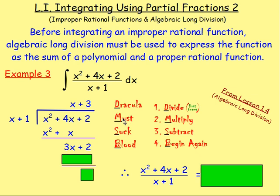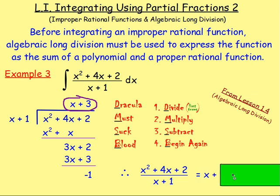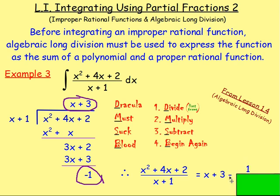The degree of this remainder is the same as what we're dividing by, so we have to begin again. 3x divided by first term x gives positive 3 — write that at the top. Multiply: 3 times x gives 3x, 3 times 1 gives 3. Draw a line and subtract: 3x take away 3x always cancels. 2 take away 3 is negative 1 — so we now have a remainder. The degree is less than that of the divisor, so we can stop. Writing this as a polynomial and a proper rational function, the polynomial is x plus 3, and the remainder over the divisor gives negative 1 over x plus 1.